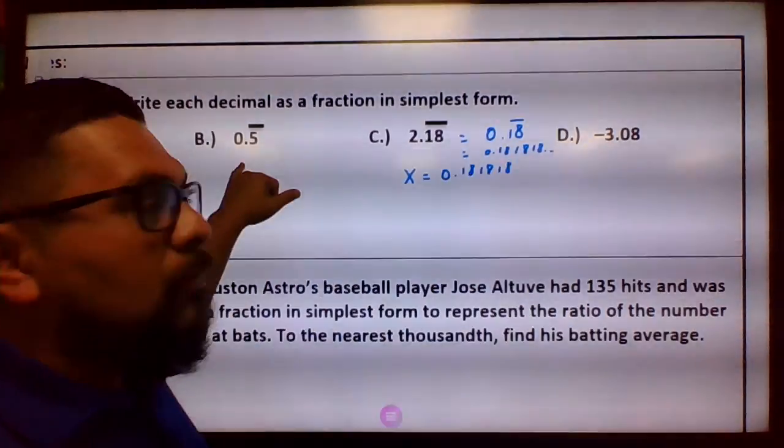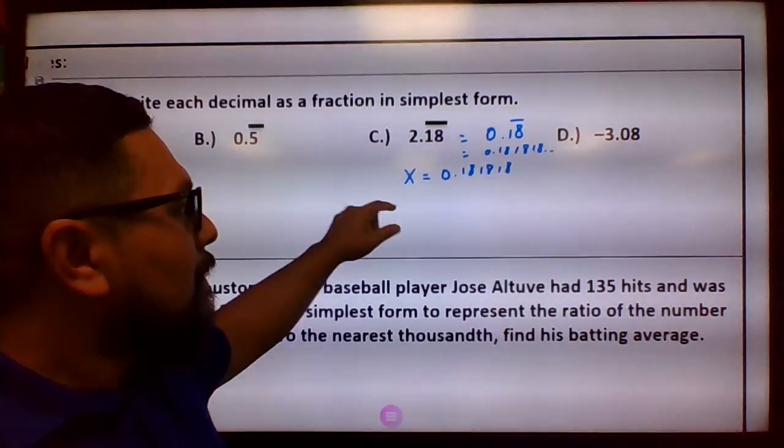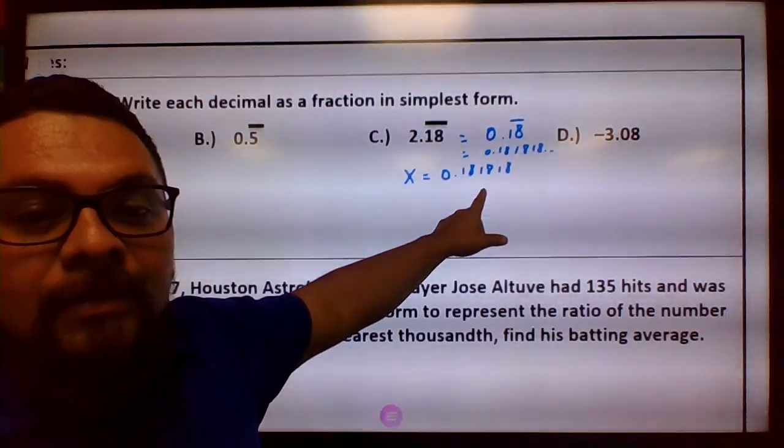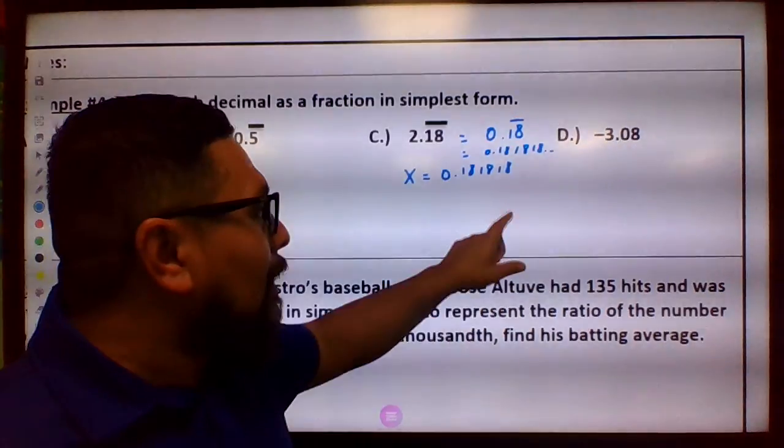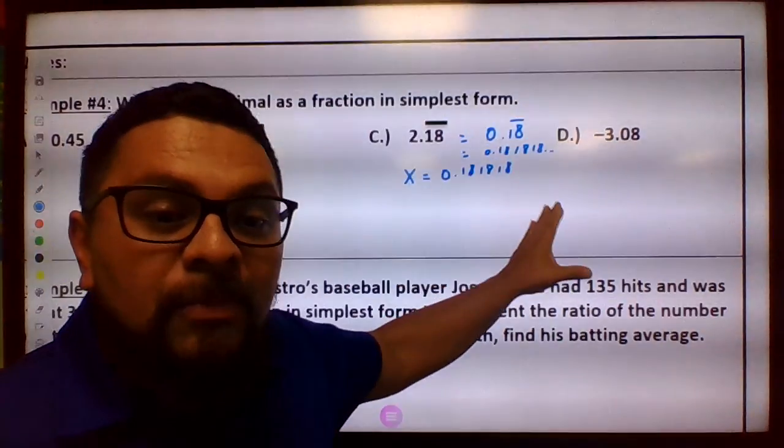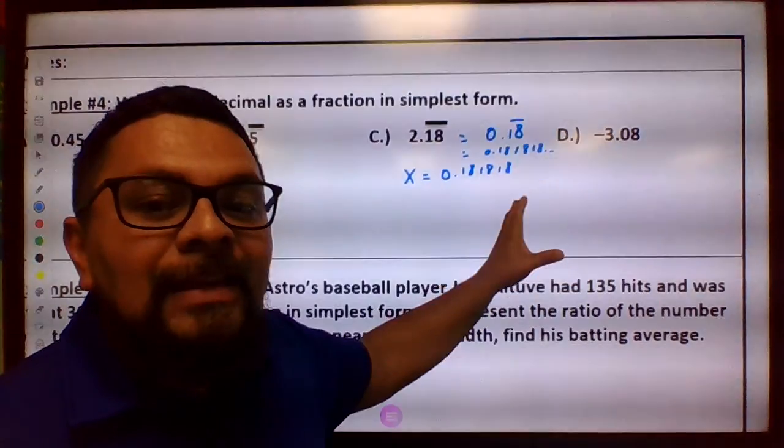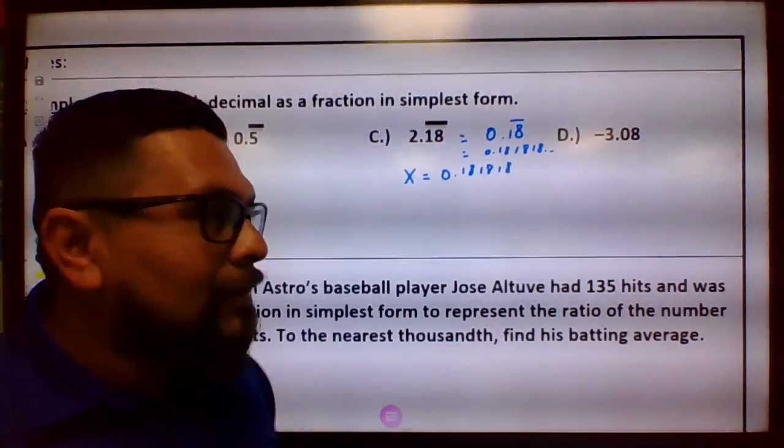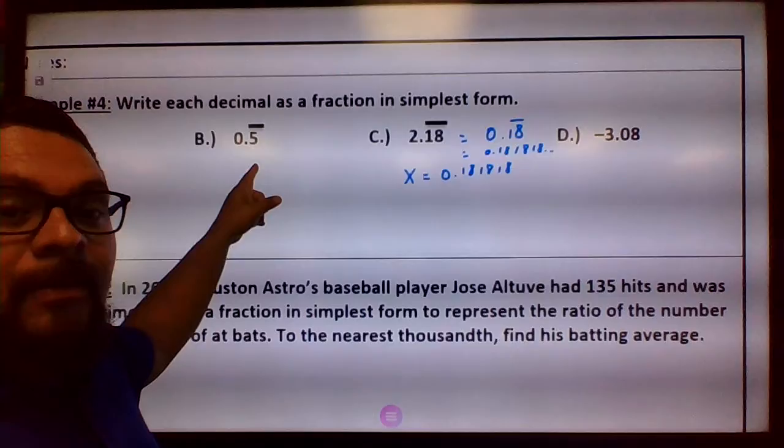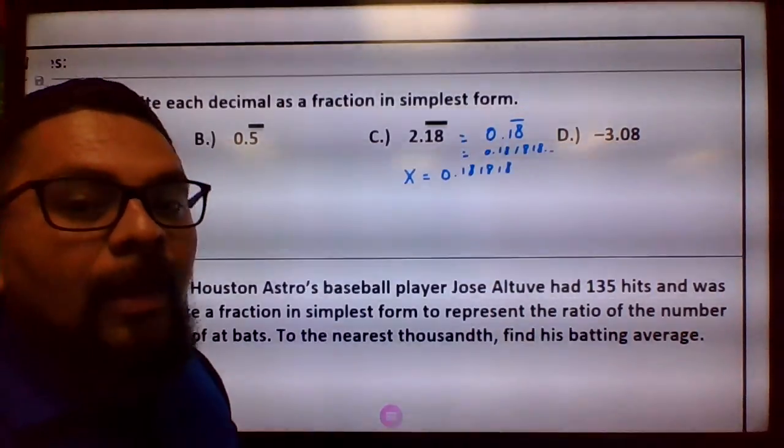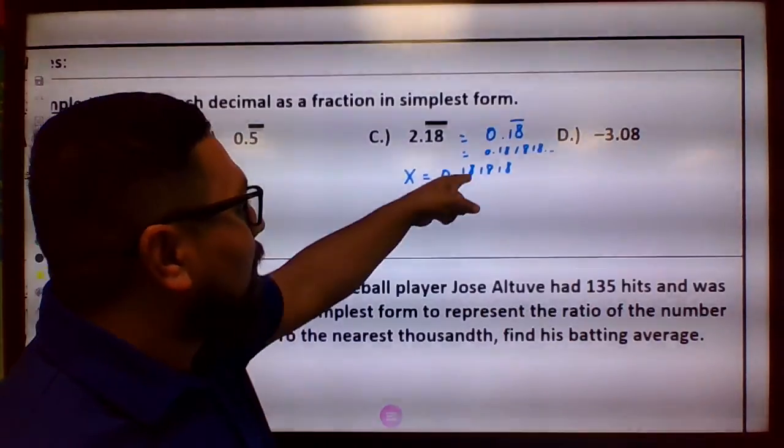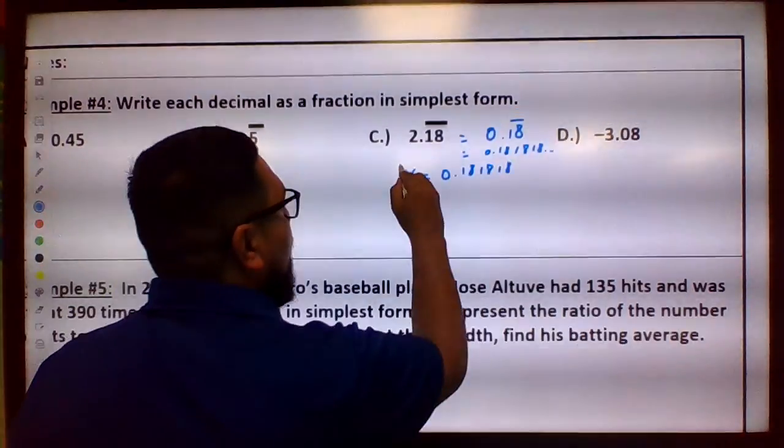So now what we're going to do here is, over here we multiplied it times 10. This one we're going to multiply times 100 because we want the decimal value to move twice, because the thing that repeats is the 18 18 18 18. This one, what repeated was the fives, so we just needed to move it once. We're going to multiply this whole thing times 100.